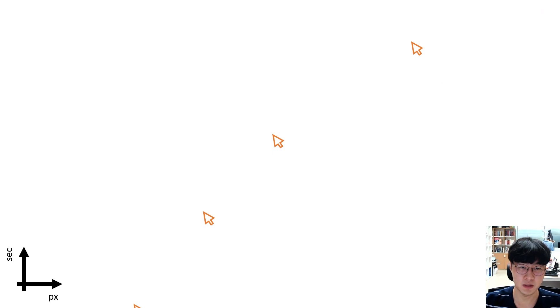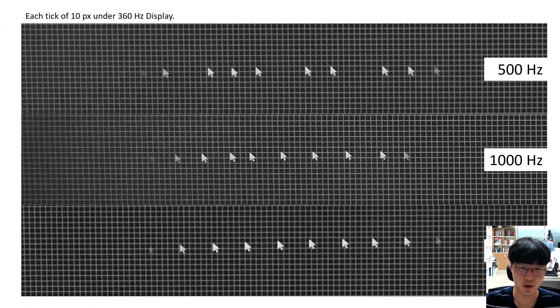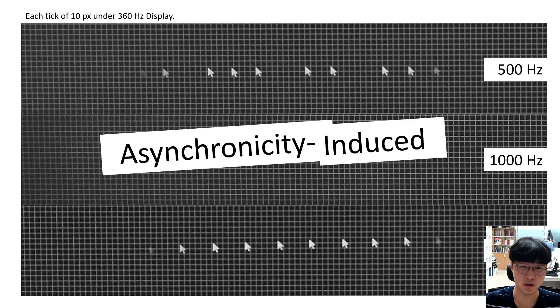This shows that some cursors polled from a mouse might not be rendered, resulting in uneven gap of cursors. We can now understand how jitter can occur over a cursor without systemic latency and noise. This kind of jitter is called asynchronicity-induced jitter.